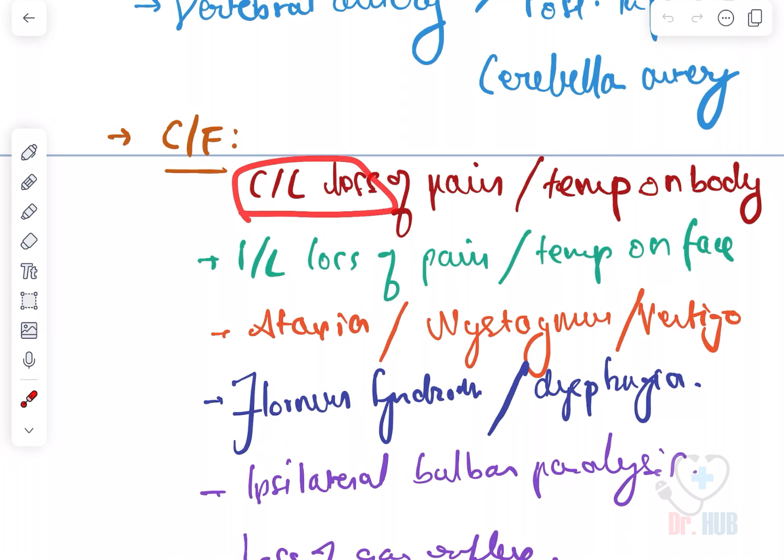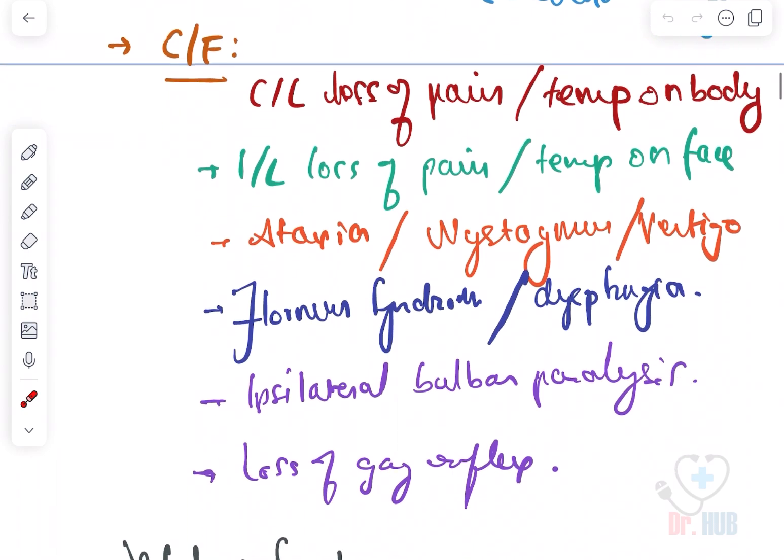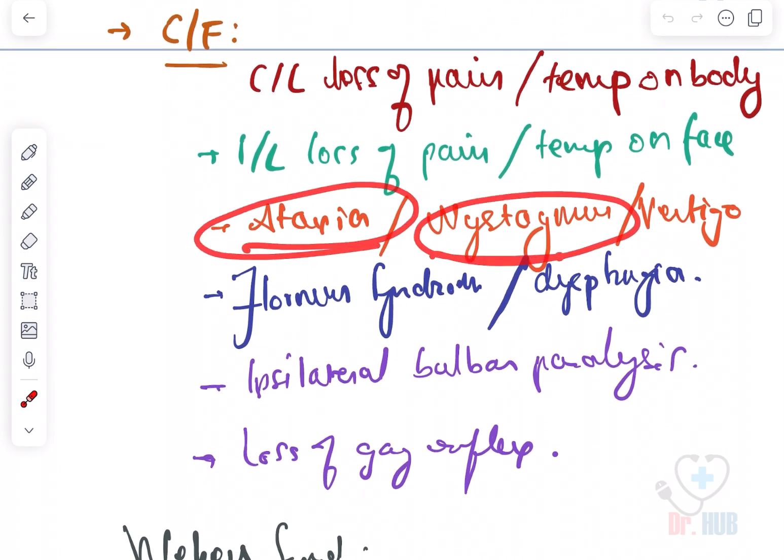Looking at the clinical features: contralaterally there is loss of pain and temperature on the body. Ipsilaterally there is loss of pain as well as temperature on the face. Next, ataxia, nystagmus, and vertigo are present.